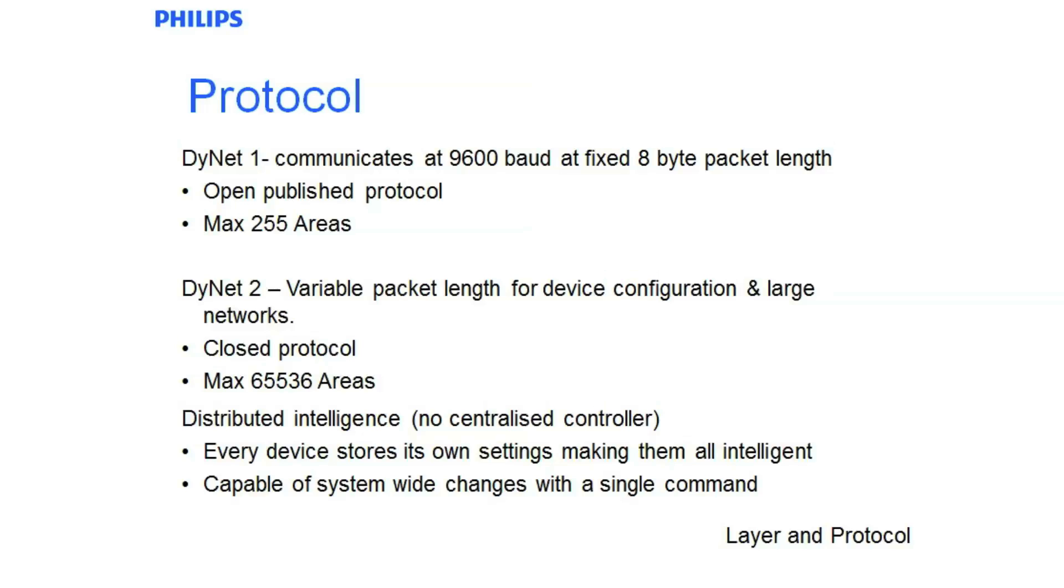Dynolite 2. With the advent of a lot of large buildings in modern day, it has required the need for Dynolite 2. Dynolite 2 is basically a variable packet length for device configuration and large networks. Typically the modern day software applications that are used by Philips Dynolite use Dynolite 2 as a way to upload and download data between the software and devices. Dynolite 2 is also used in large network systems where we run a Dynolite 2 backbone down the trunks of large buildings and then we run Dynolite 1 spurs on a per floor basis. This allows for a really good trunk and spur topology where we can put offsets on each floor and then have independent floor control but still global control from anywhere on the trunk.